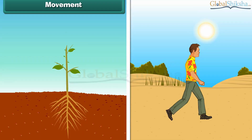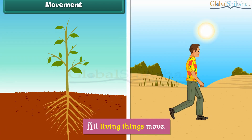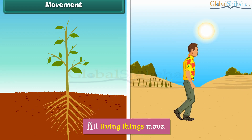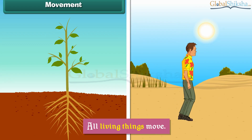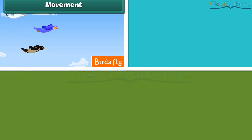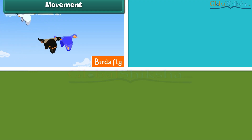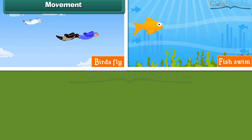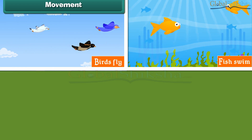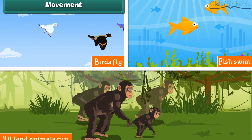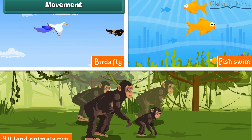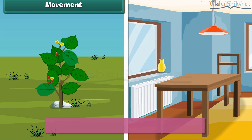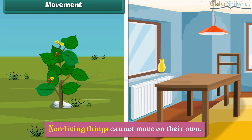All living things move. For example, birds fly, fish swim, and all land animals run. However, non-living things cannot move on their own.